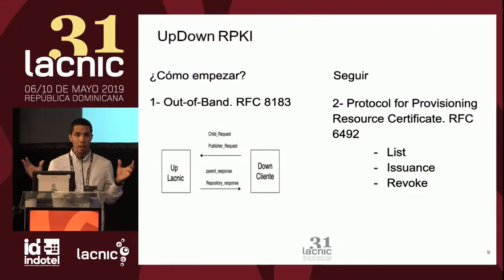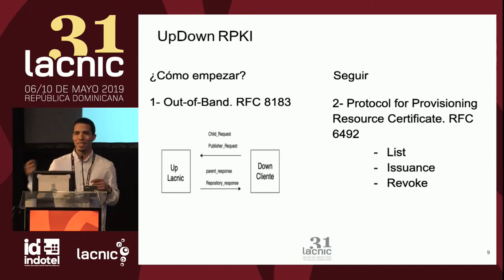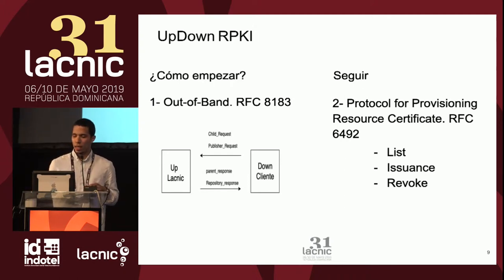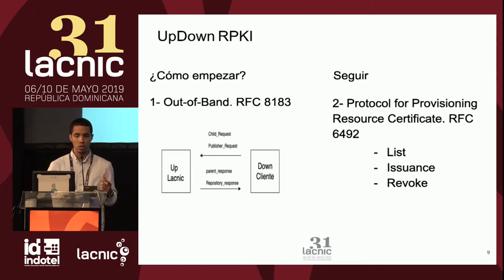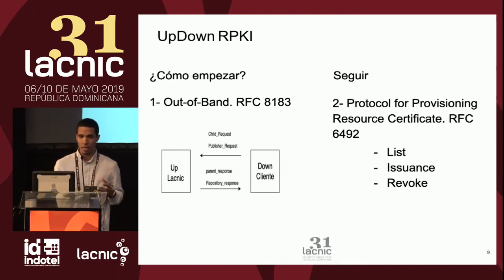Una vez teniendo ambas partes identificadas, pasamos a las operaciones que puedes realizar con UpDown. Son tres operaciones. El cliente puede emitir una solicitud LIST, en la cual le solicita al server un listado de todos los certificados que le han sido emitidos en RPKI. También puede enviar una solicitud ISSUE, en la cual le indica a la CA que le emita un certificado con todos los atributos que envía en la solicitud. Y por último, REVOKE, donde el cliente emite una solicitud con el hash de su clave pública y el server debe buscar todos los certificados asociados a esa clave pública y revocarlos.